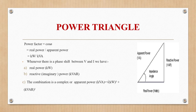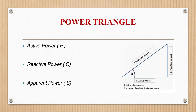Whenever there is a phase shift between voltage and current, we have real power in kilowatts and reactive power in kVAR. Their combination is the complex or apparent power. Power factor is the cosine of the angle between voltage and current, represented as cos φ, which equals real power divided by apparent power. The angle phi is the phase angle, and cosine of phi gives the power factor.